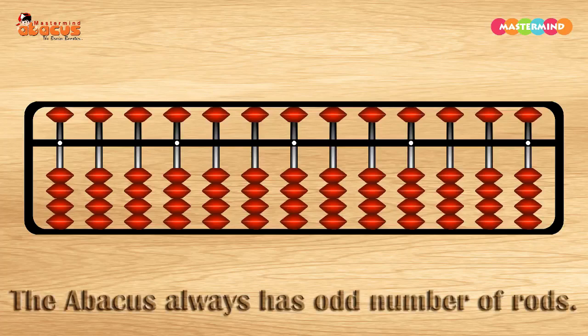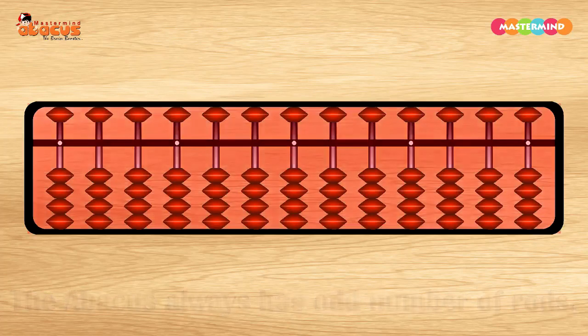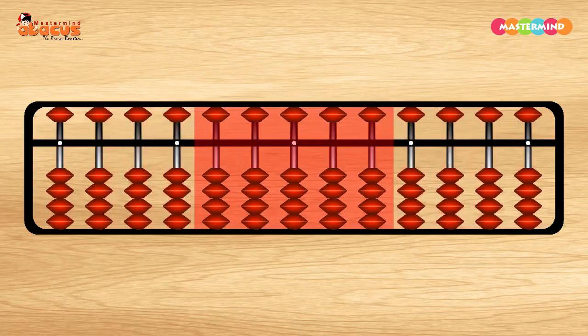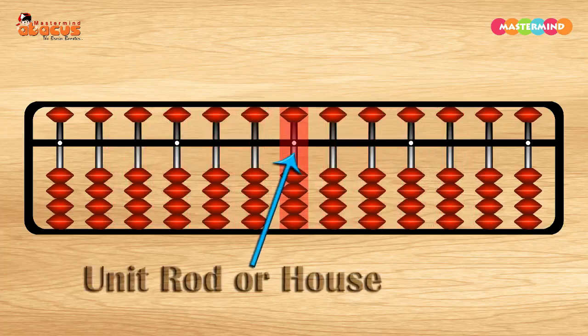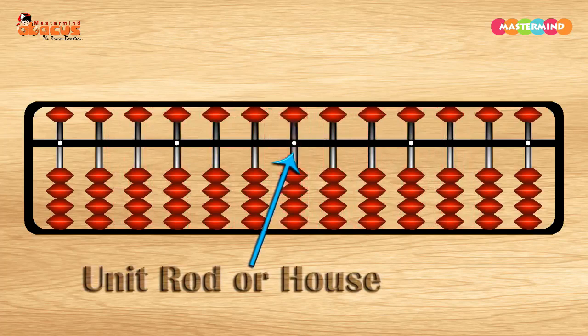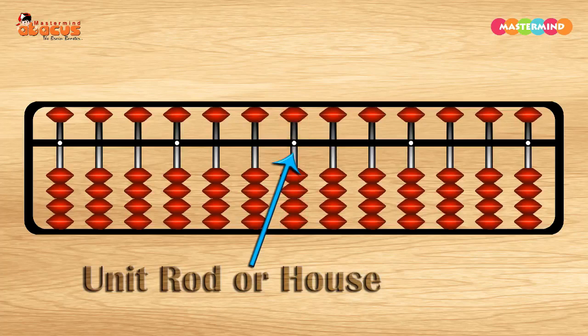The Abacus always has odd number of rods. If we divide the rods equally on each side, and then the one left is the unit. Or we can also call it the house. We start our counting from unit rod or house.